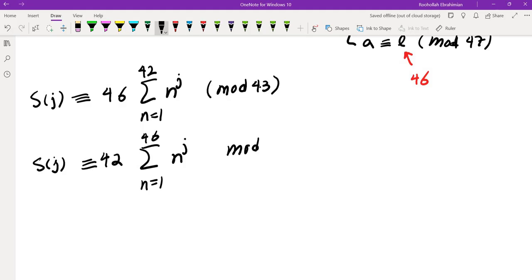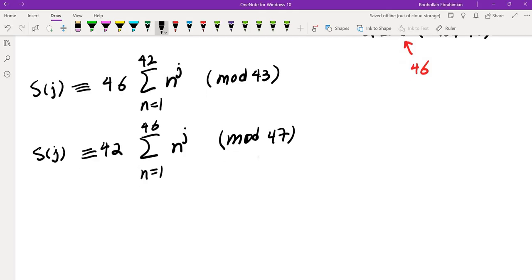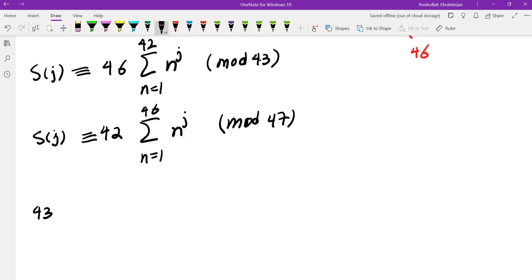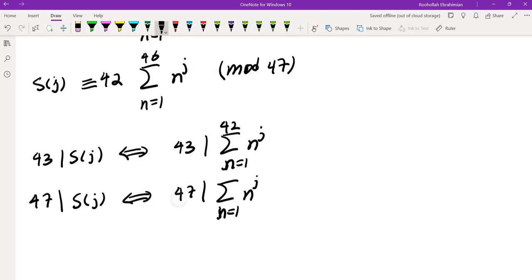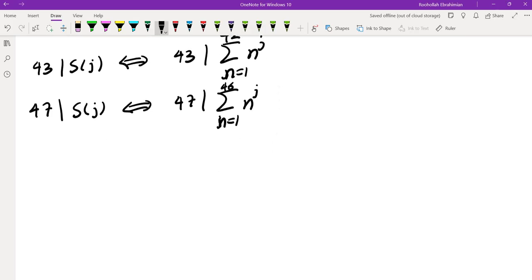So when is S(J) divisible by 43? 43 divides S(J) if and only if 43 divides the sum of n^j from n = 1 to 42. And when does 47 divide S(J)? This happens exactly when 47 divides the sum of n^j from n = 1 to 46.